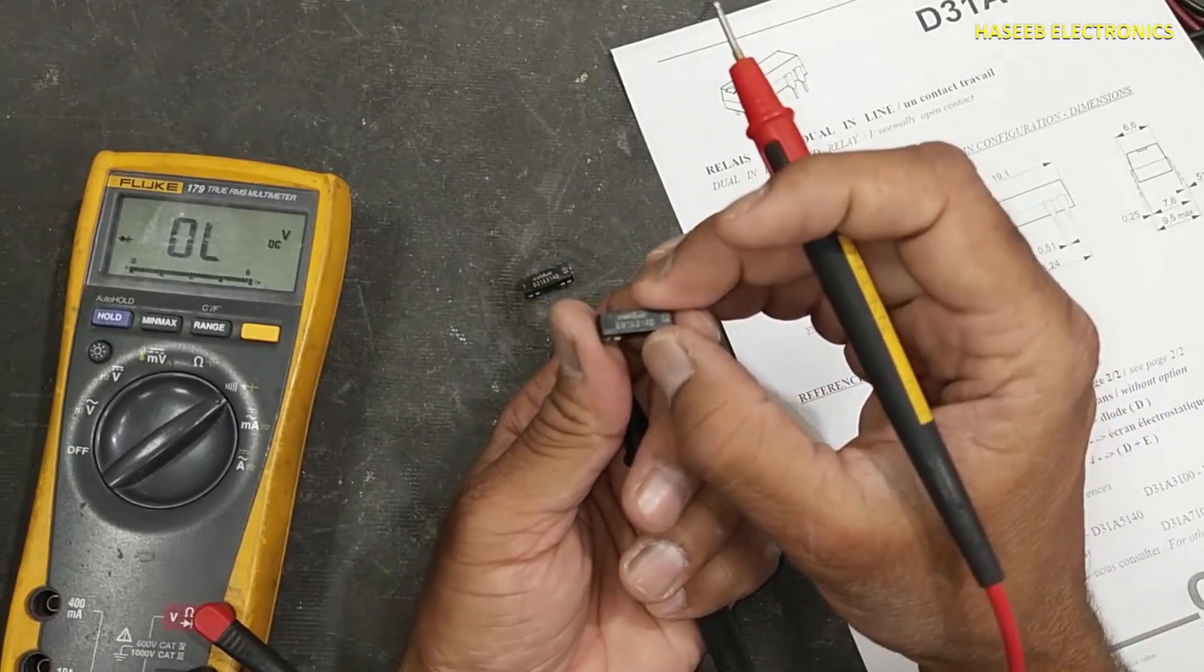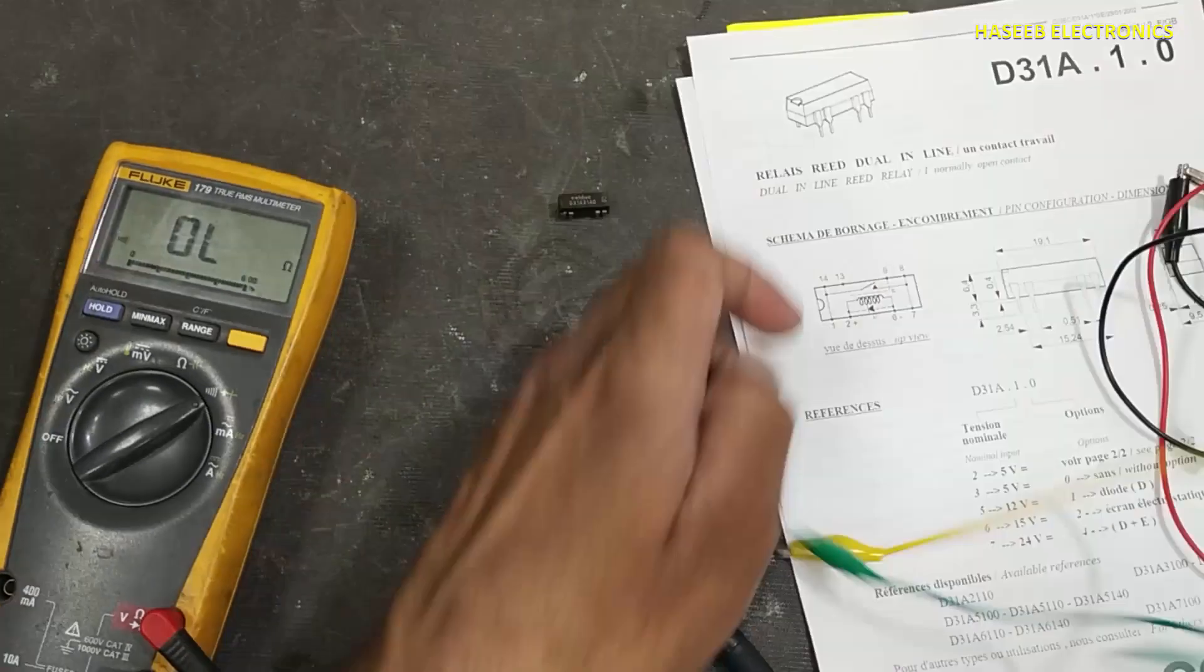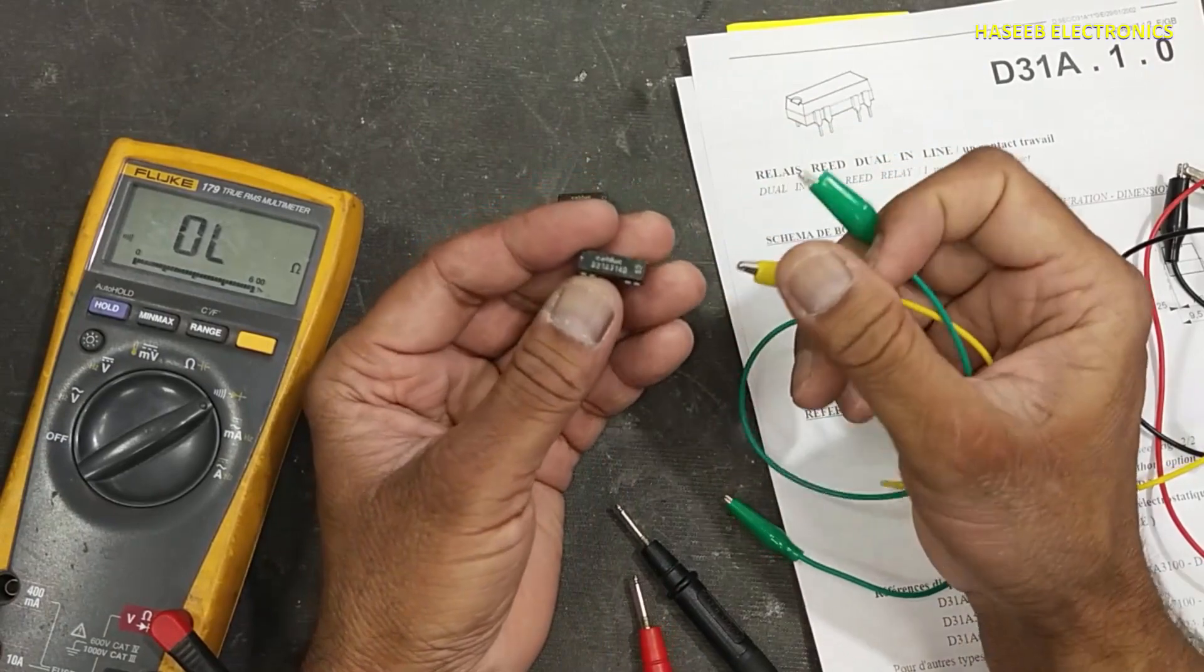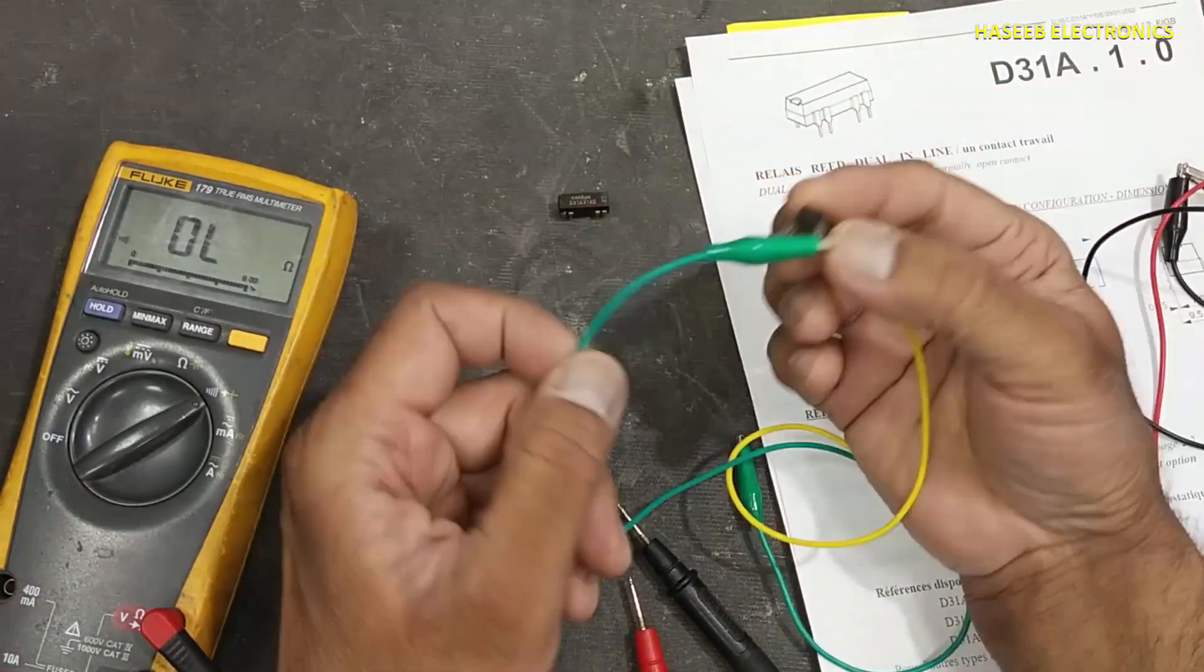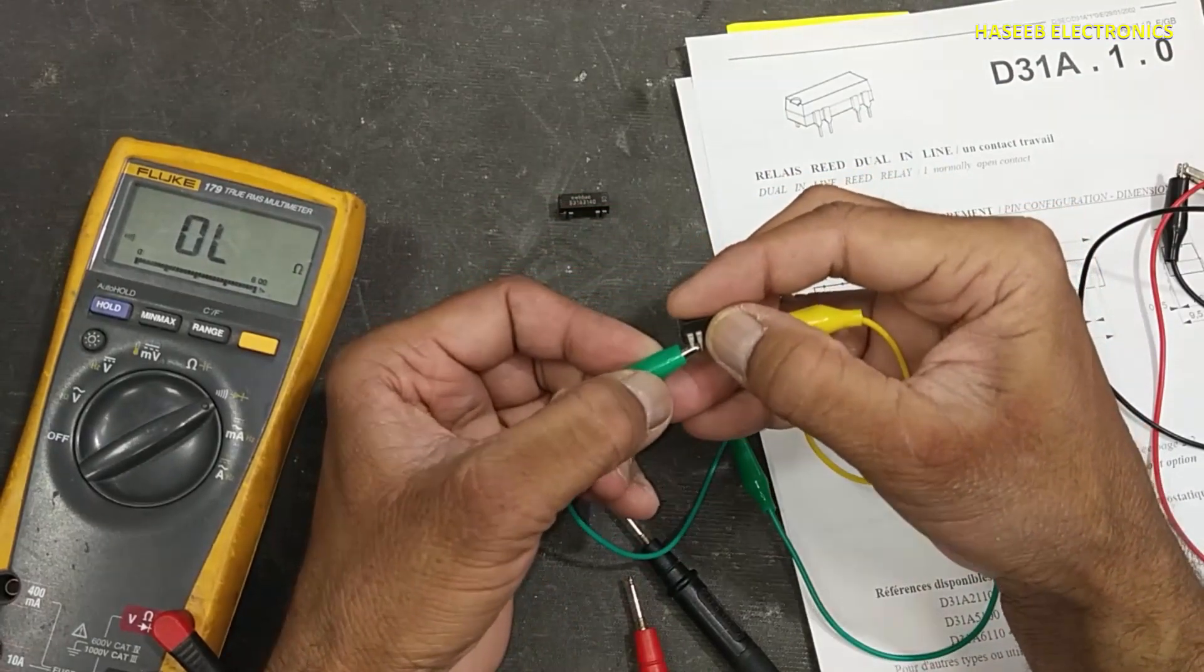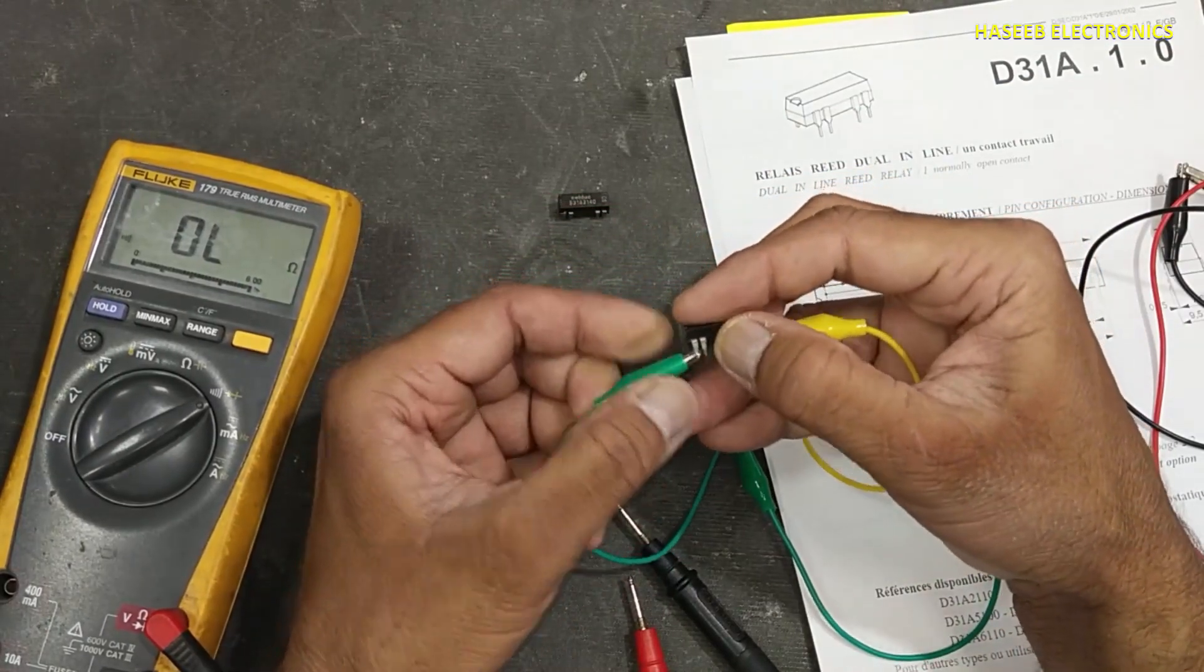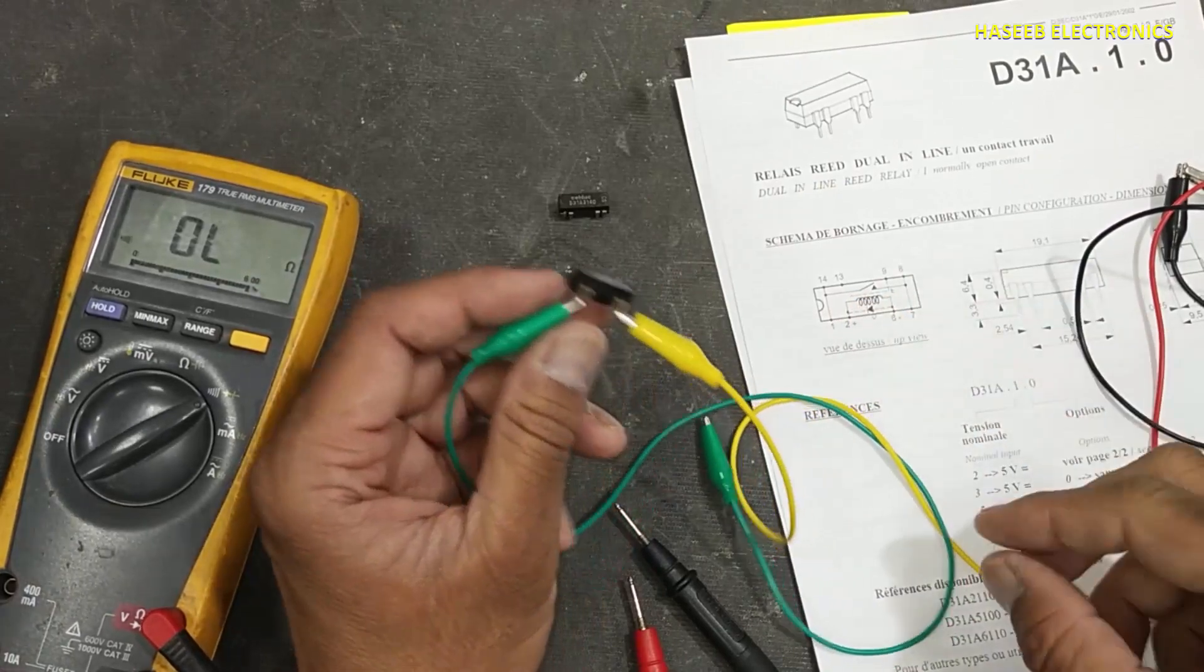This relay is damaged. That test was in the off condition. Let's apply power and test it. We will connect a continuity meter between pin number 1 and 7—that is the reed relay contact points.